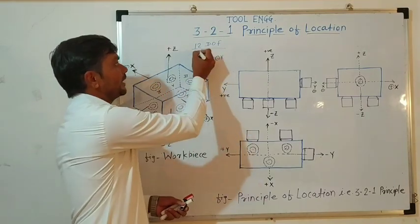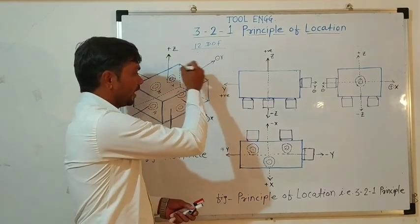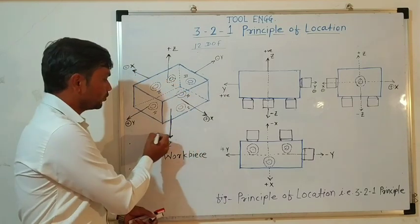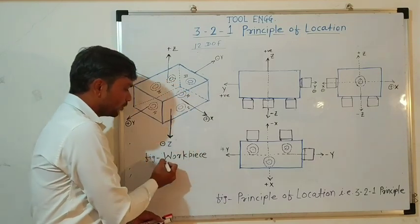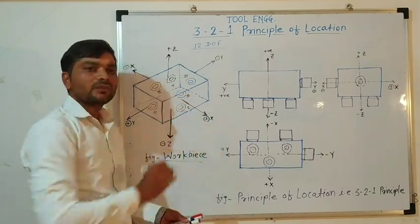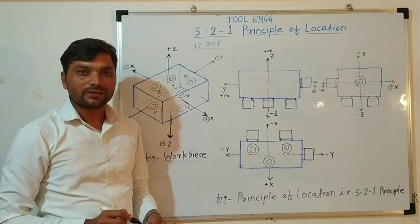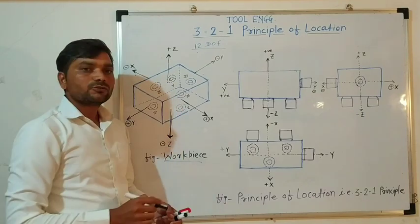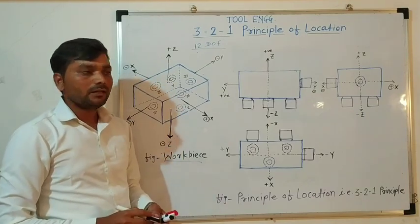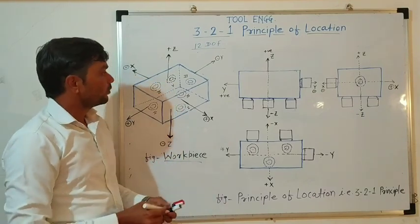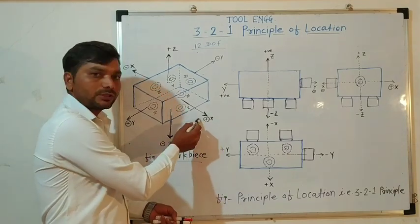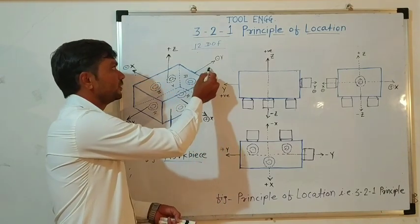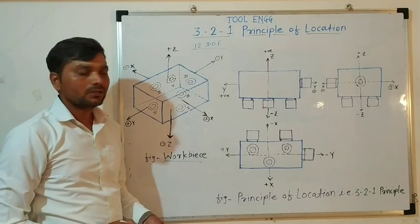We have to restrict these 12 degrees of freedom in order to achieve the machining processes. When we keep this object in a space, we have here 3 coordinate axes. The first one is the x-axis, the second one is the y-axis, and the third one is the z-axis.